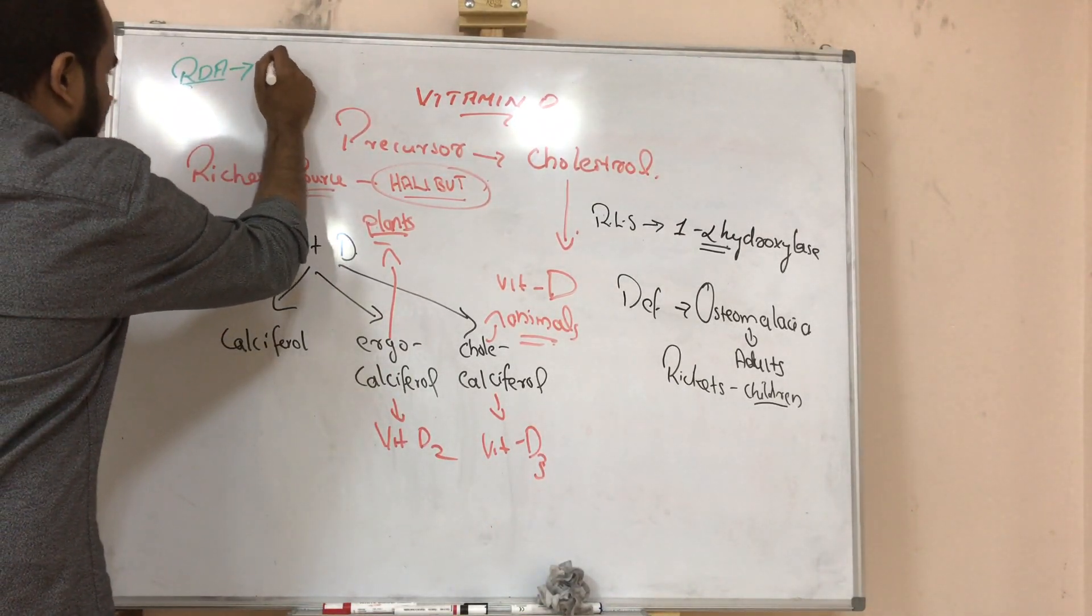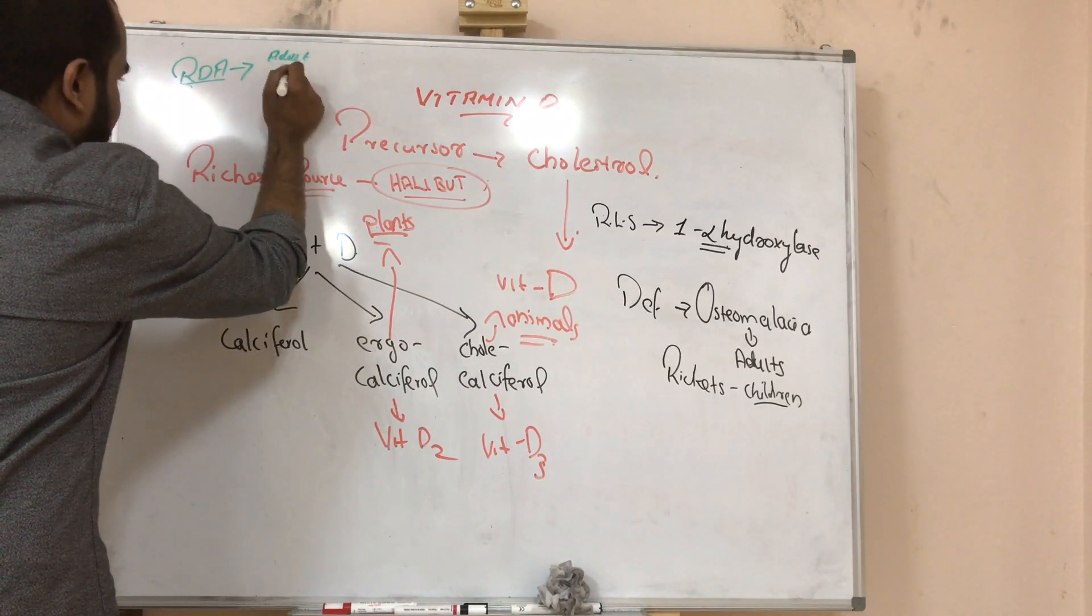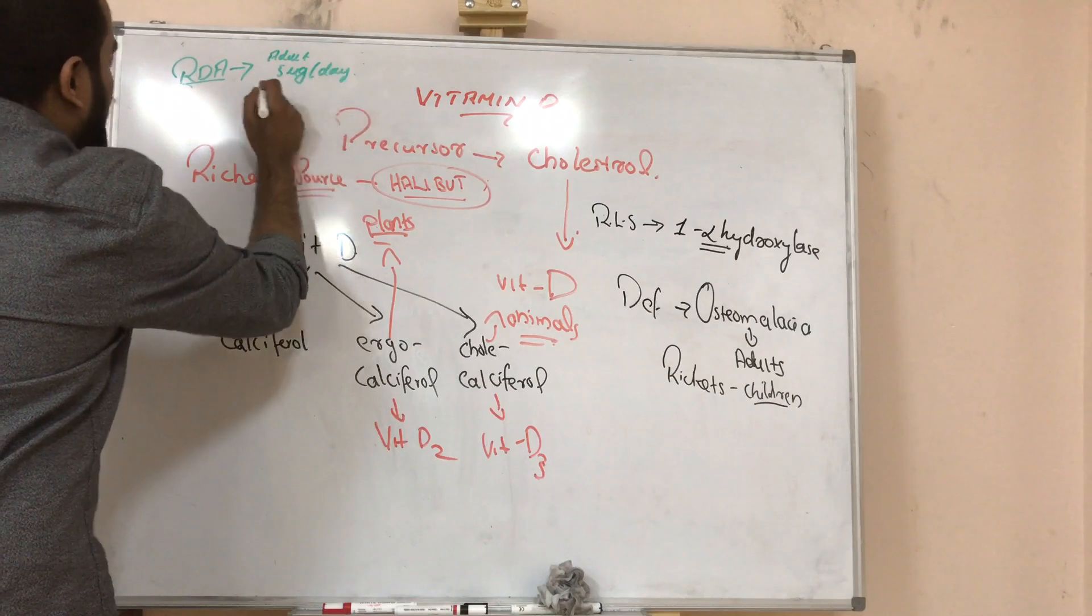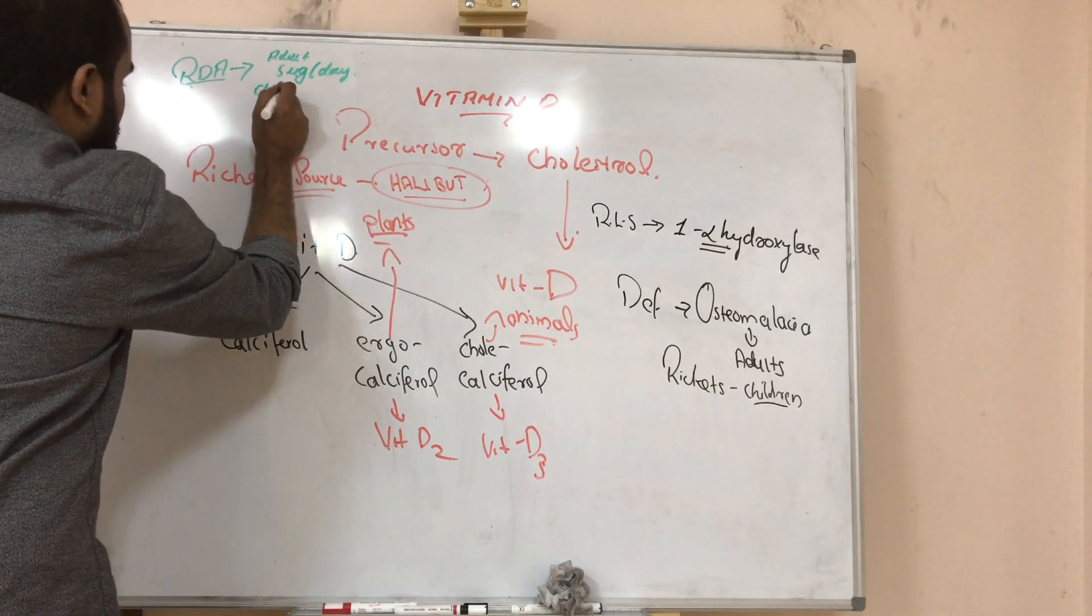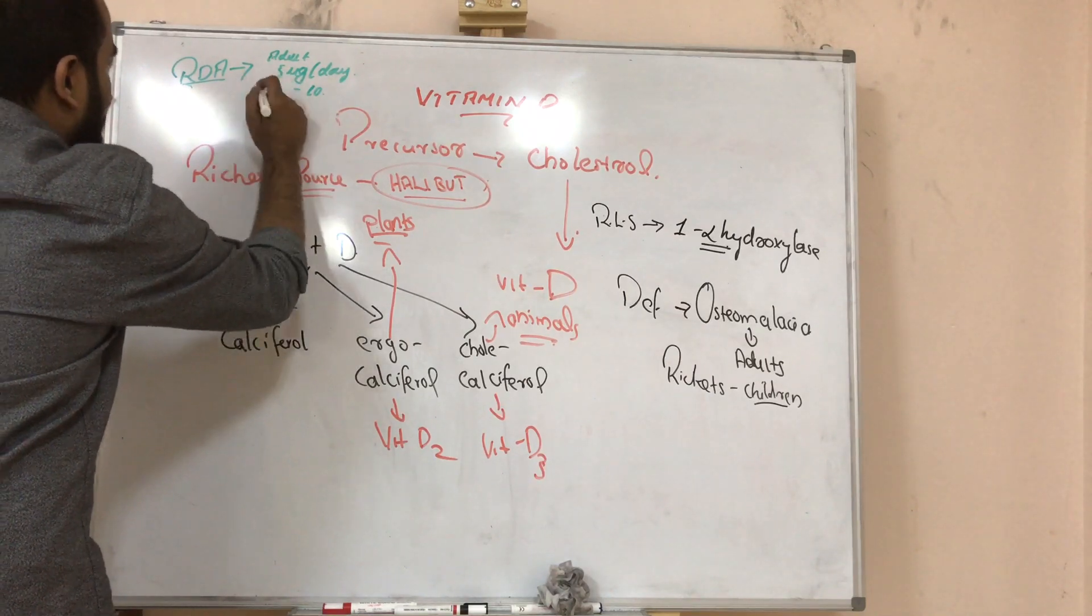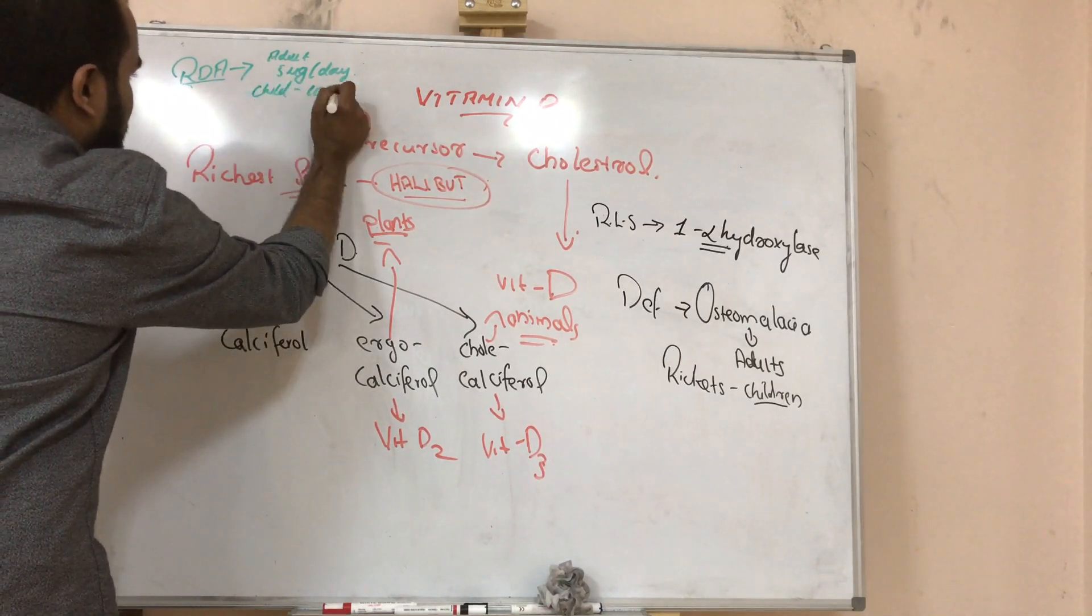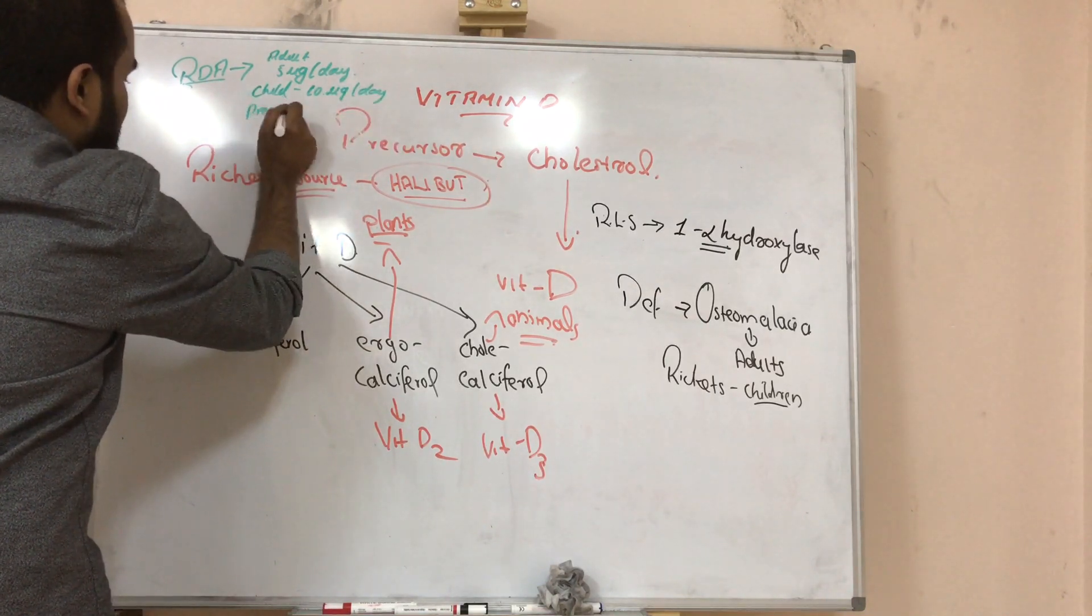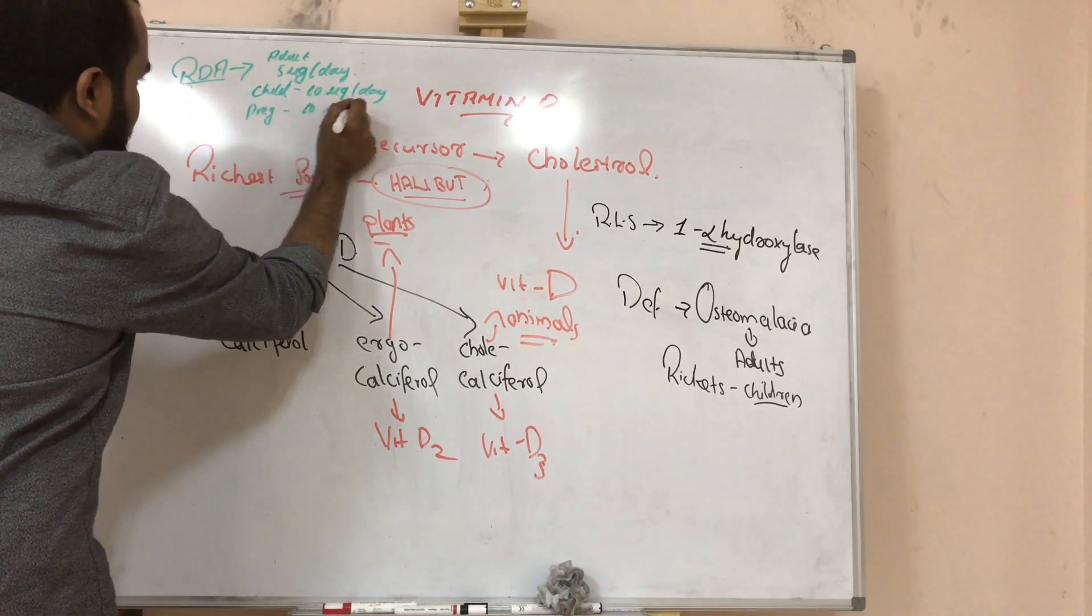For an adult you need 5 micrograms per day. For a child, 10 micrograms per day, and for a pregnant woman, 10 micrograms per day.